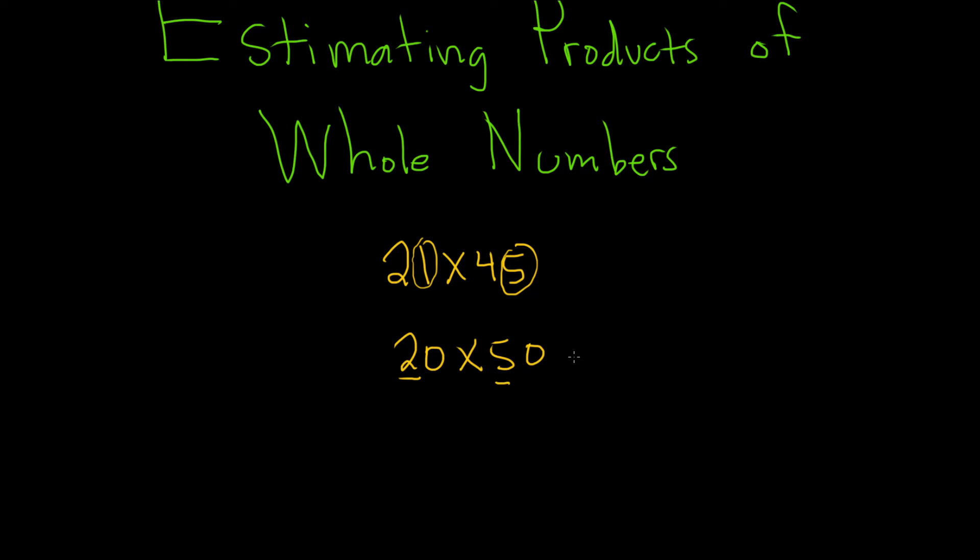2 times 5 is 10. And there's two zeros. 1, 2. And that would be the answer. So you just do 2 times 5. That gives you 10. And then you write down the number of zeros.